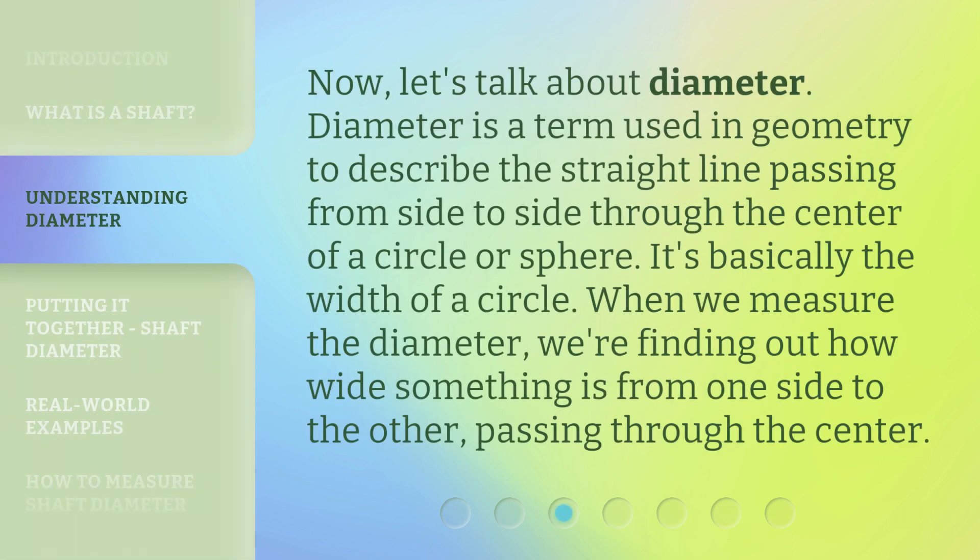Now, let's talk about diameter. Diameter is a term used in geometry to describe the straight line passing from side to side through the center of a circle or sphere. It's basically the width of a circle. When we measure the diameter, we're finding out how wide something is from one side to the other, passing through the center.